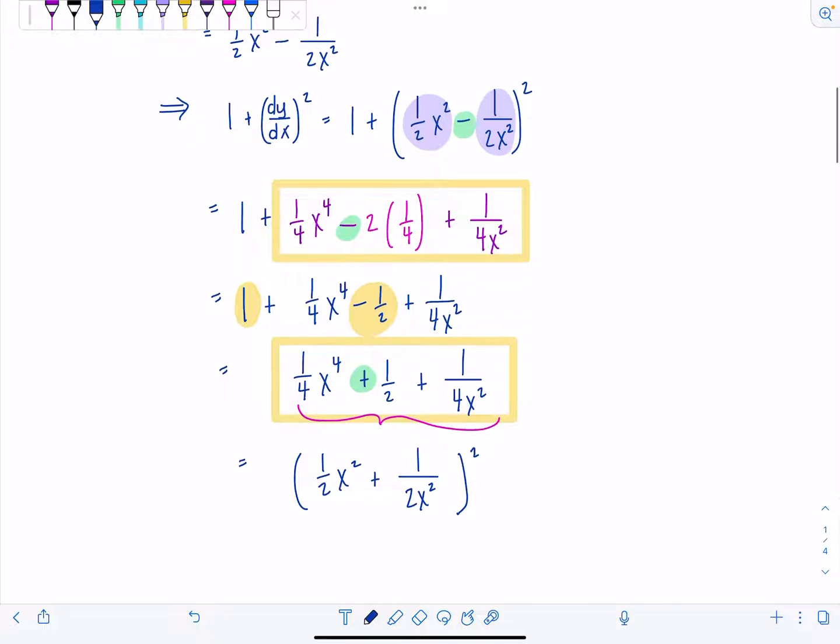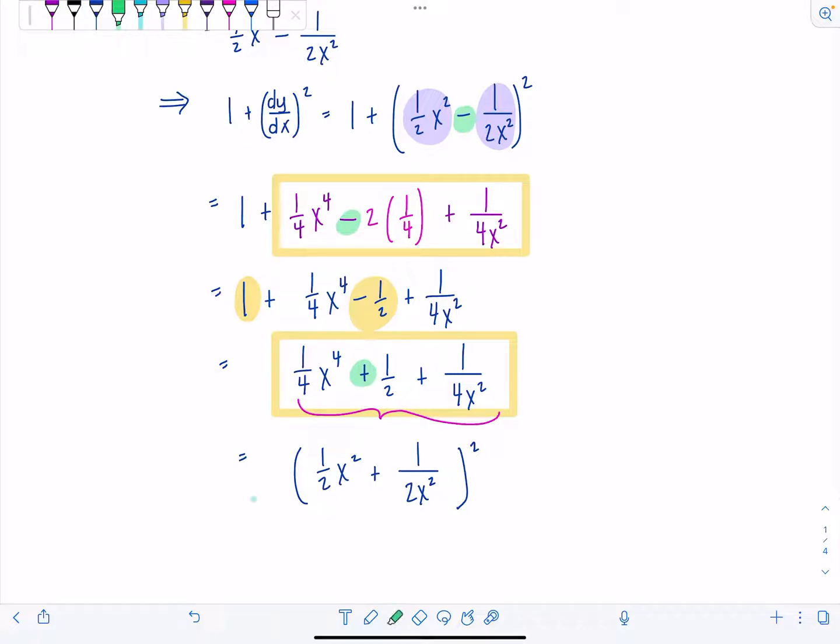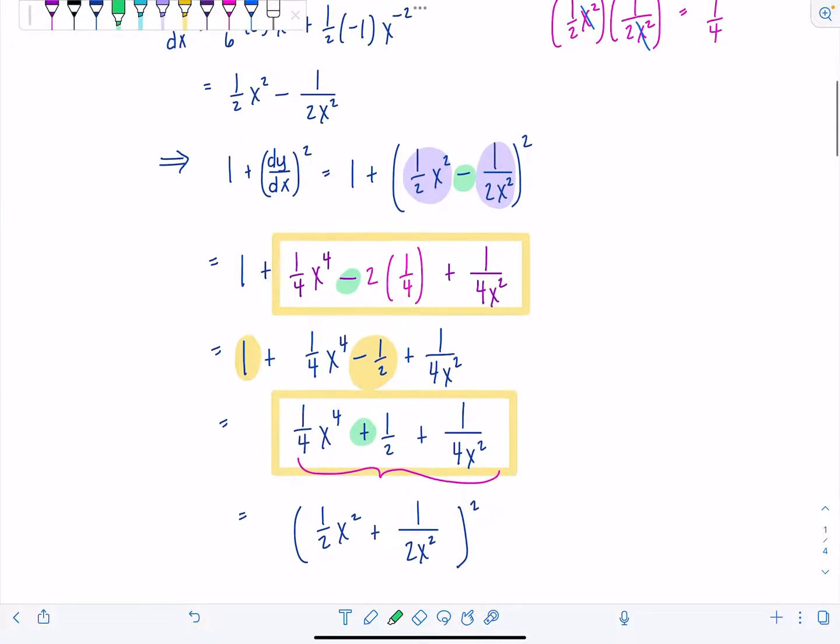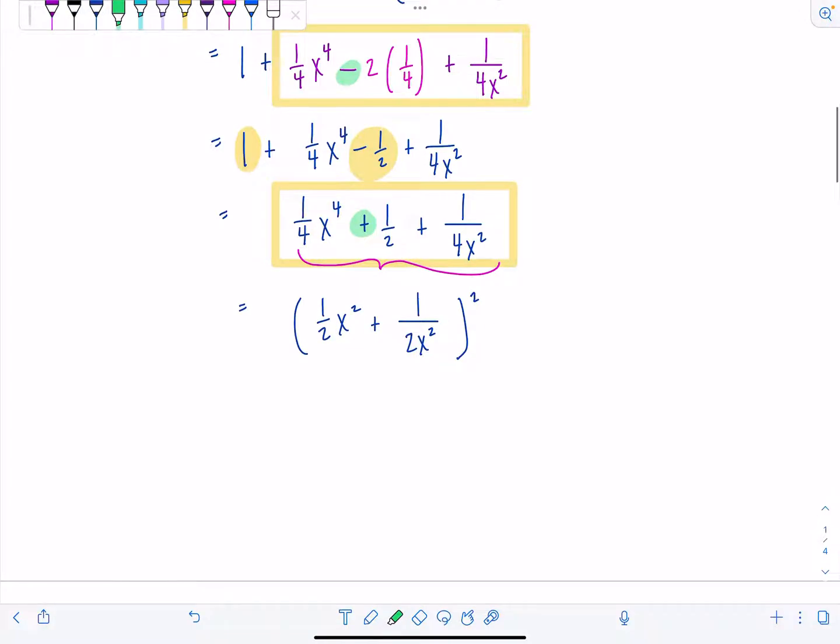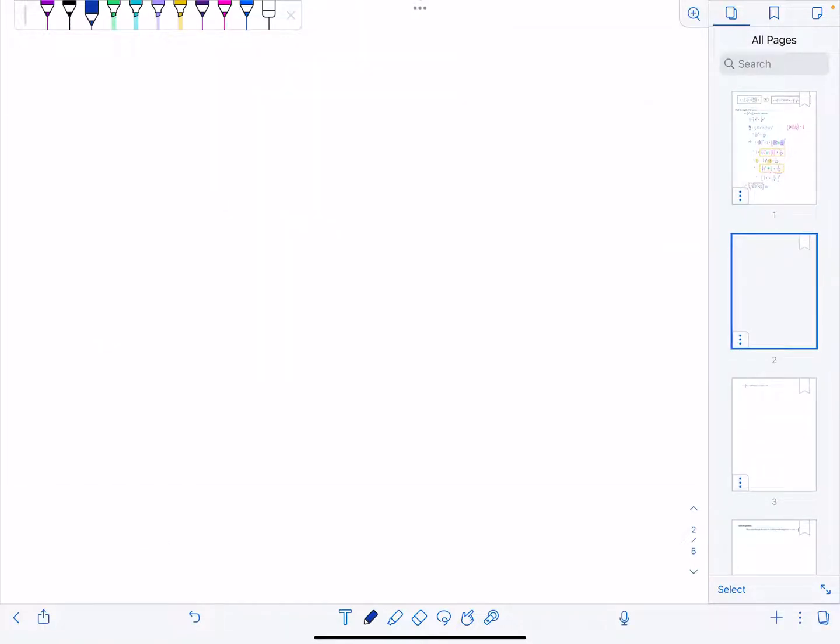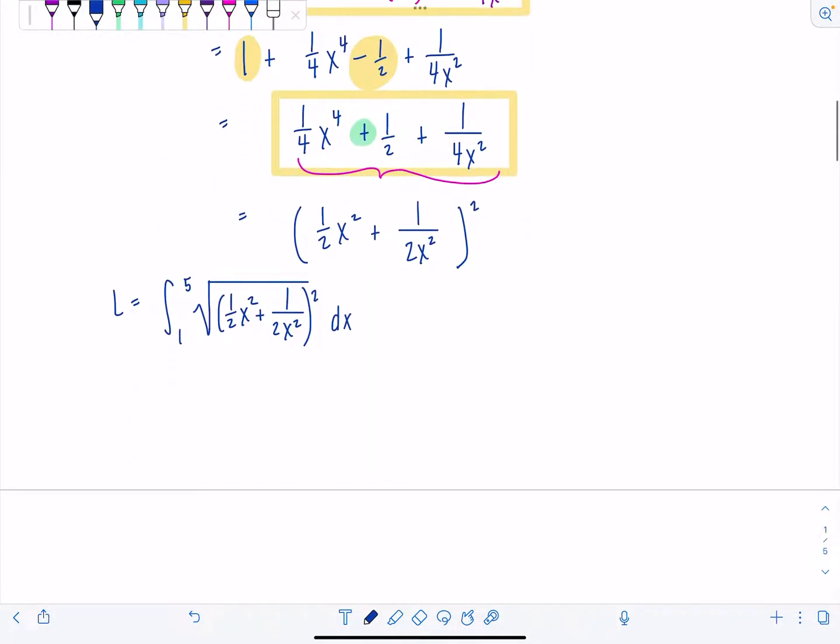Now I'm really thrilled to integrate this because if I have a big radical sign, then it'll just cancel with the squared, my exponent. So great. We're ready to set up our integral. Limits of integration are one to five. So arc length is going to be definite integral from one to five. I have square root of one half x squared plus one over two x squared squared dx.